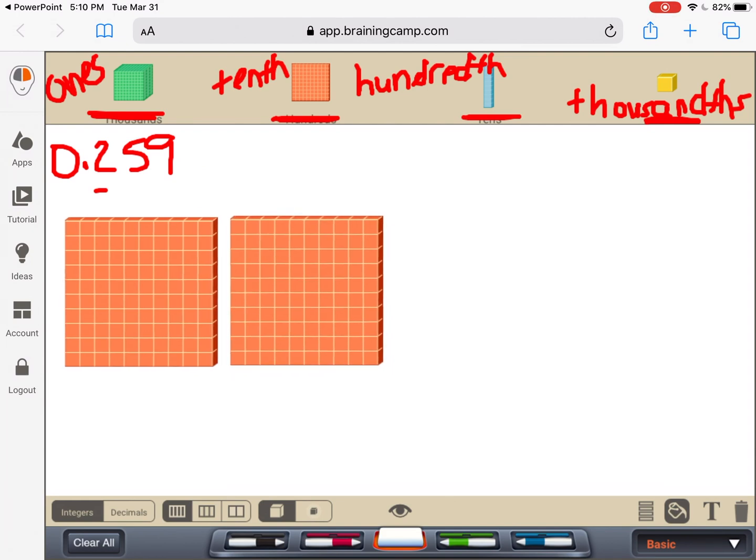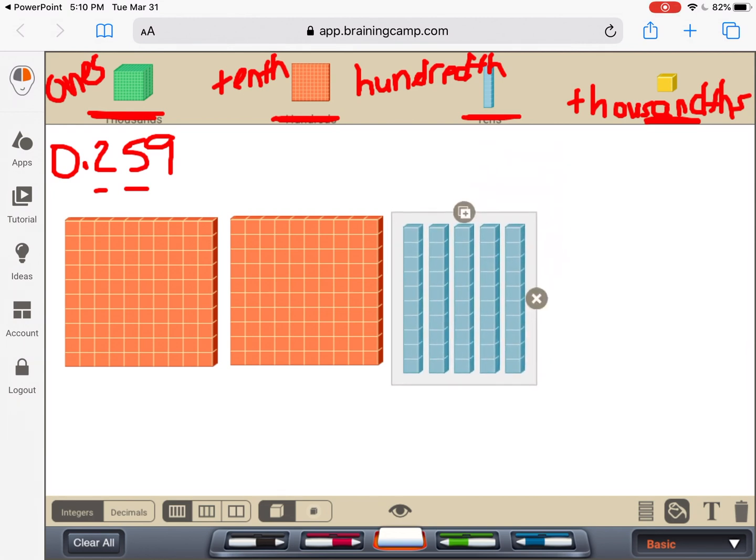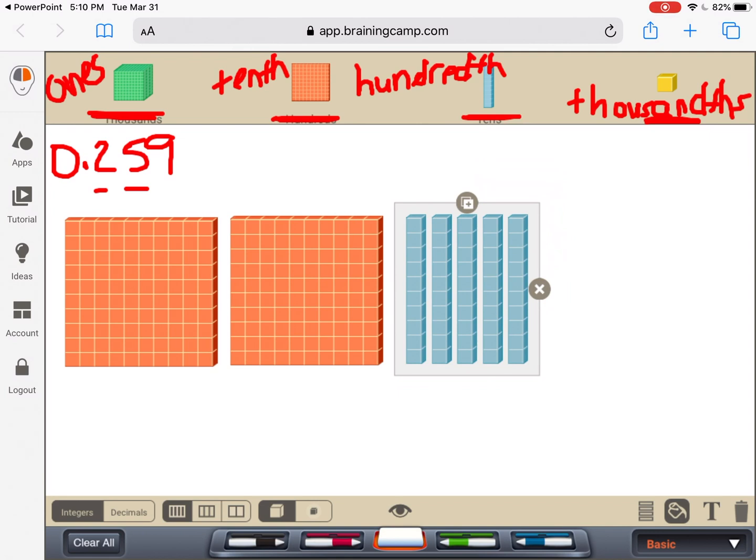And then how many hundredths does the number 0.259 have? It has five. So one. Okay. And then how many, I'll put those right here. And then how many thousandths are there? So how many thousandths? There are nine. So there we go. So bring those down.